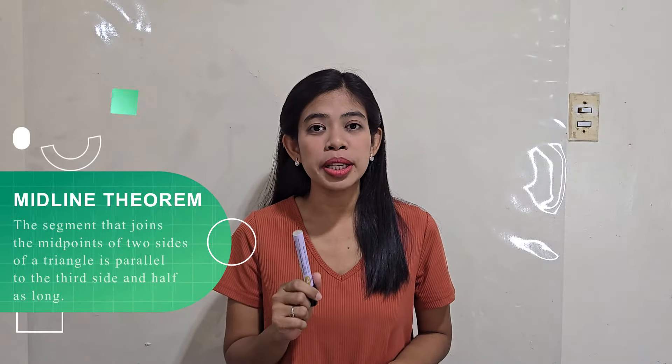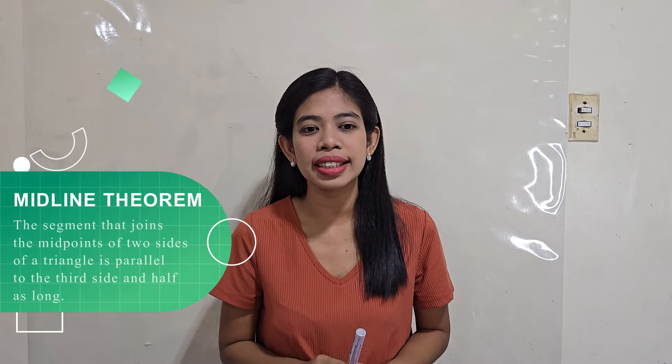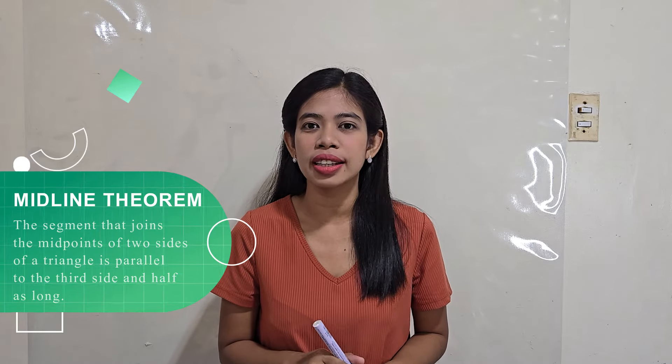The Midline Theorem states that the segment that joins the midpoints of two sides of a triangle is parallel to the third side and half as long.